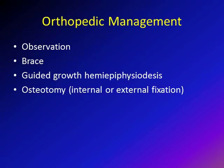What is the orthopedic management for Genu Varum? Observation is appropriate if this is a physiologic case expected to improve with time, keeping in mind that by ages three to four years children should be in valgus alignment. Bracing can work in early cases, especially Blount disease, but if there is no improvement after six months of bracing, surgery may be needed. Surgical options are mainly guided growth or osteotomy.